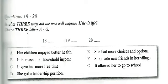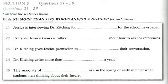Now turn to section 3. Section 3. You will hear a conversation between a student, Jessica, and Dr Kitching, a university advisor. First, you have some time to look at questions 21 to 25. Now listen carefully and answer questions 21 to 25.